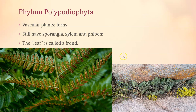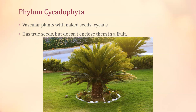Cycadothida is the group cycads belong to. Cycads are commonly used as landscaping plants — the sago palm belongs here. They are not great outdoor plants in Texas because if it freezes they will die back. This is our first group that does have true seeds, but they don't cover their seeds with fruit, so they have what is sometimes called a naked fruit.